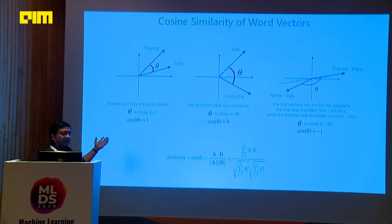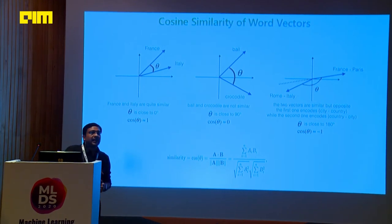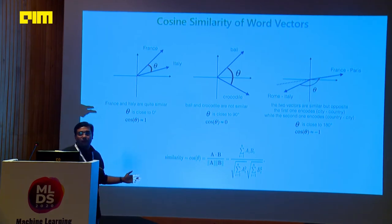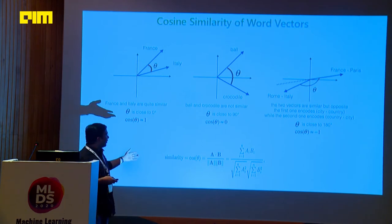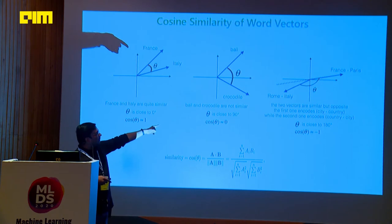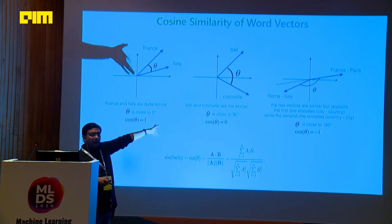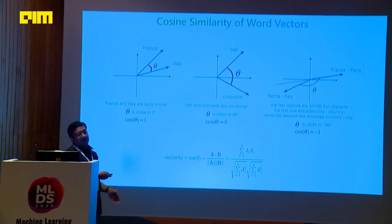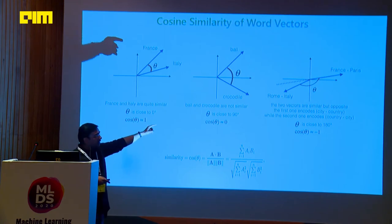Cosine similarity measures direction instead of magnitude. We want to see how two words or two sentences are close with respect to direction, not magnitude. France and Italy are pretty close, while ball and crocodile are pretty far. The France-Italy pair and Rome-Italy pair, where country and capital are inversed, are in the opposite direction - so you get a cosine similarity of minus one. The relationship over there is inversed. And this is the cosine similarity formula.